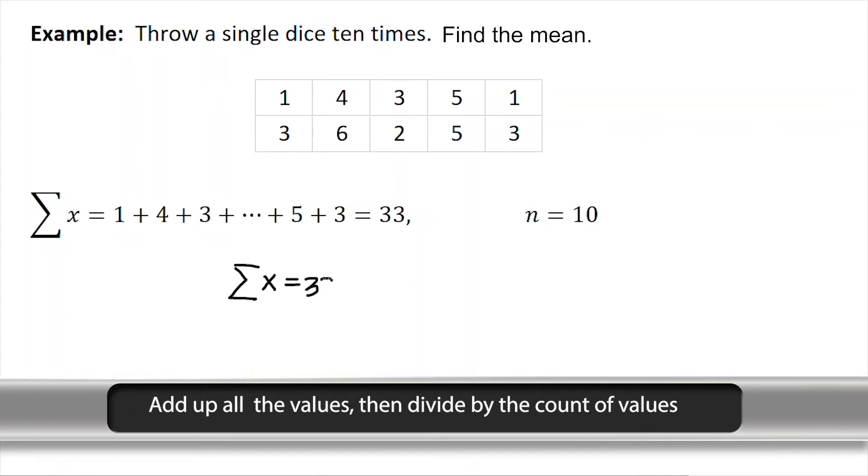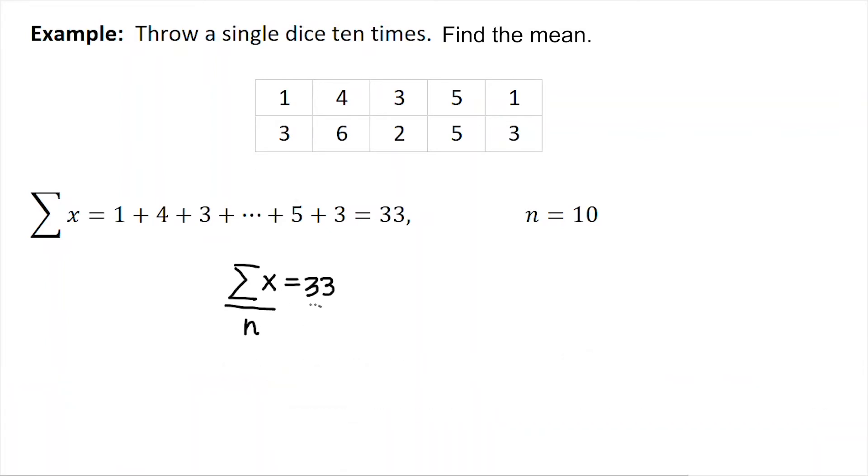If we add up all of the different data points, that would be written as sigma X (ΣX), that gives us 33. Then we divide that by the number, lowercase n, because it's a sample, in this case 10. That means the mean or the average is 3.3.